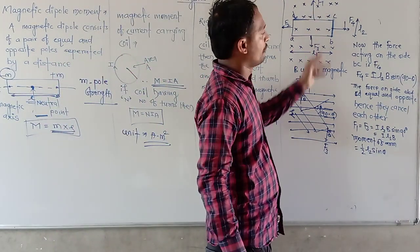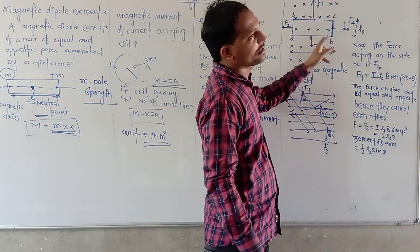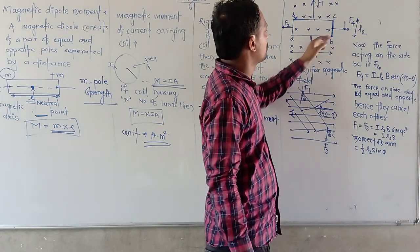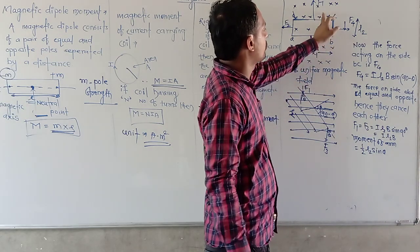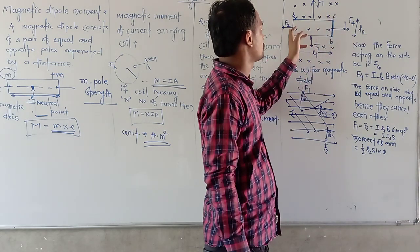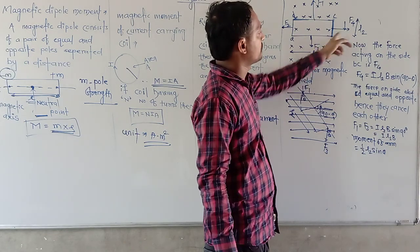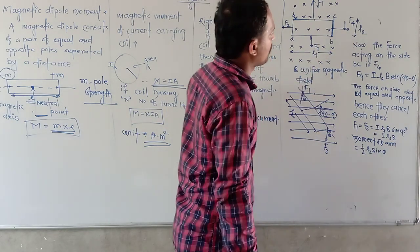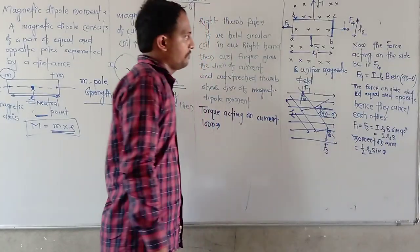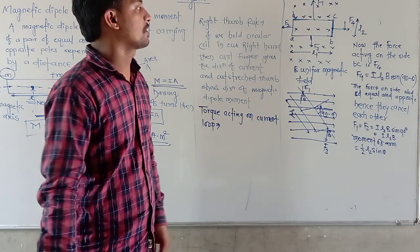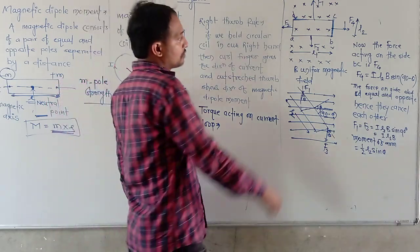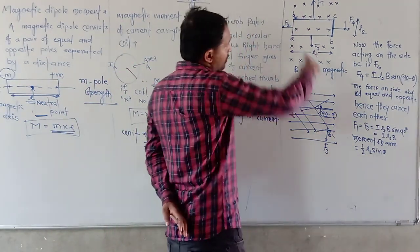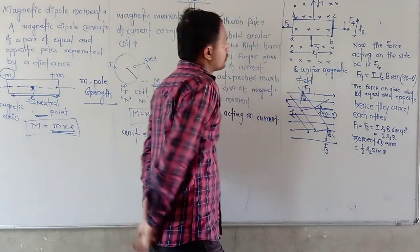On each arm we have representative forces. On the first arm we have force F1, on the second F2, on the third F3, and on the fourth arm we have force F4. This is a rectangular loop, so this side is L1 and this side is L2.